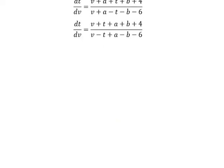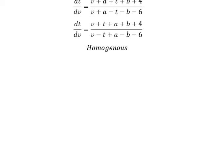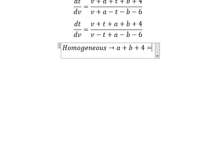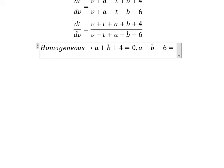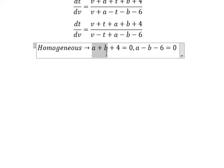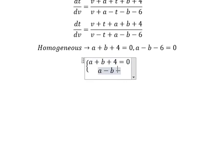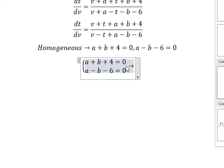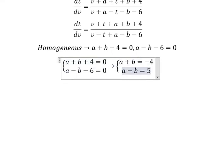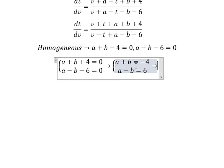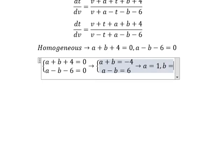Now we want to create a homogeneous equation. That means we set a plus b plus 4 equals zero, and a minus b minus 6 equals zero. We move 4 and negative 6 to the right side and solve for a and b. We get a equals 1 and b equals negative 5.